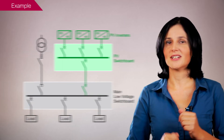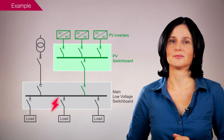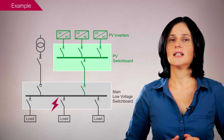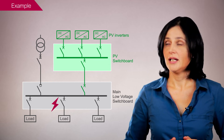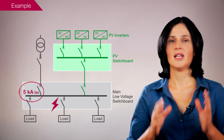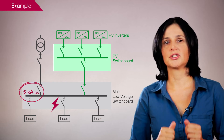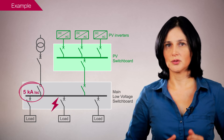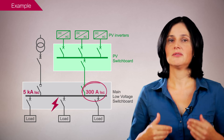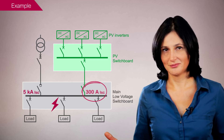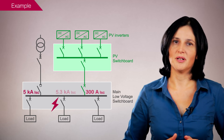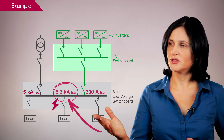Now, the short-circuit current calculation. When considering only the grid contribution, the calculated short-circuit current value at the main bus bar is 5 kilo amps. When adding photovoltaic production, the photovoltaic contribution to the fault current is 300 amps — this value is provided by the inverter manufacturer. Therefore, the short-circuit at the main bus bar is raised to 5.3 kilo amps.